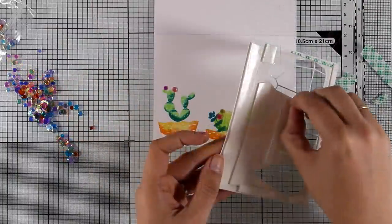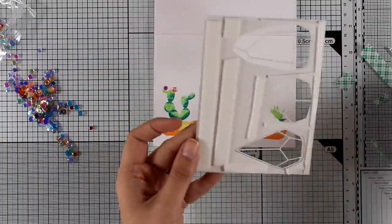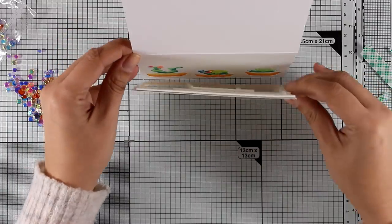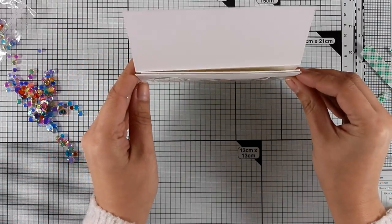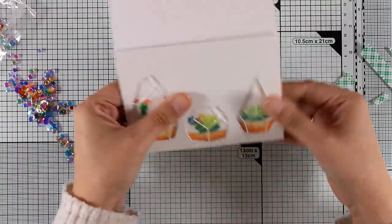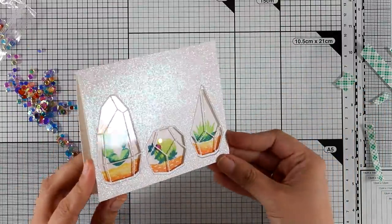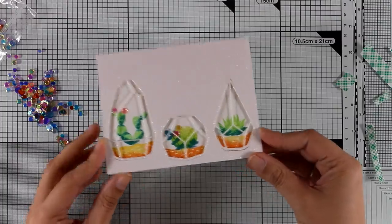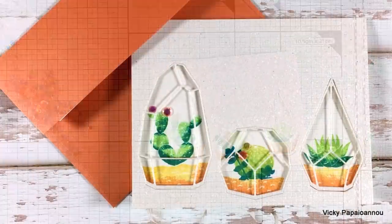Now I can peel off the backing from the tape adhesive and then stick this panel on top of my card base, making sure that I align everything correctly. Since I used this glitter card I cannot stamp on top, but I can always cut out a sentiment and stick it on top, or I can stamp on the inside, which is exactly what I'm going to do.